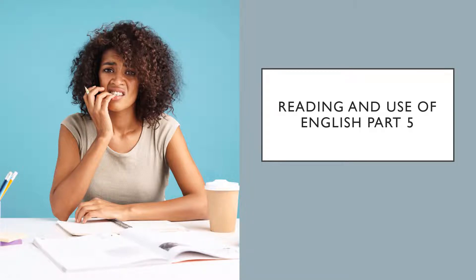In this task, you're given a long text and six multiple choice questions to answer. The reading text could be from a range of sources — it might be from a newspaper or a magazine article, it could be an extract from a novel, or it could come from a journal. The six questions will test your understanding of the text, but they're going to test much more than just basic comprehension skills. In this part of the exam, the questions will test your detailed understanding, including things like understanding the writer's opinions, implications that they might make, purpose and tone.